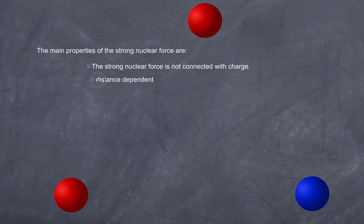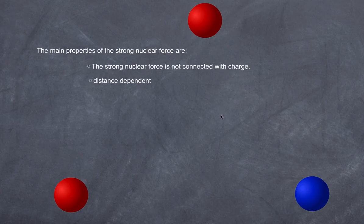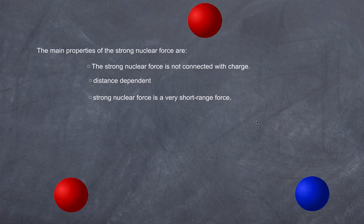The second key property is that the strong nuclear force is dependent on the distance between nucleons. This distance affects two things: first, whether the force is repulsive or attractive; and second, the strength of the force. The strong nuclear force is a very short-range force — it only acts over a certain distance. Beyond roughly 2.5 femtometers, the strong nuclear force becomes negligible and electrostatic forces take over, which becomes significant for understanding radioactive decay.